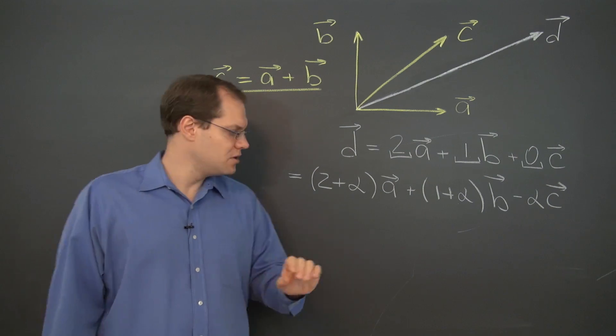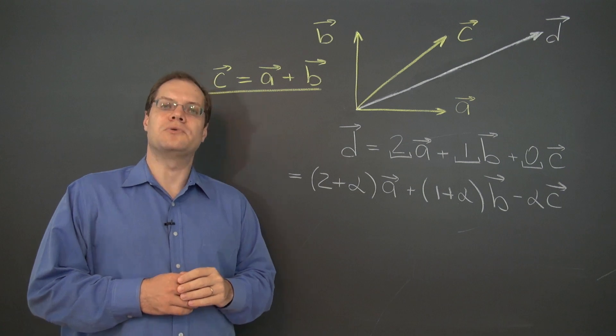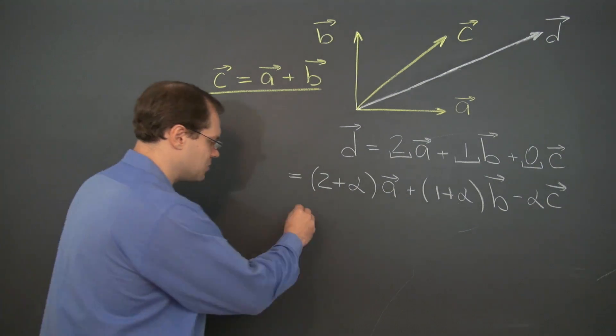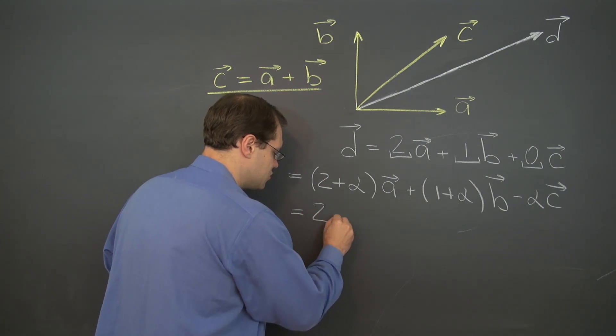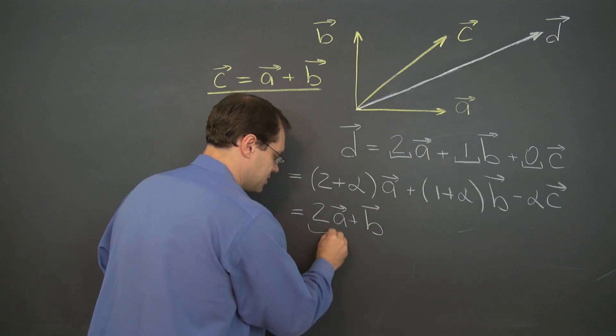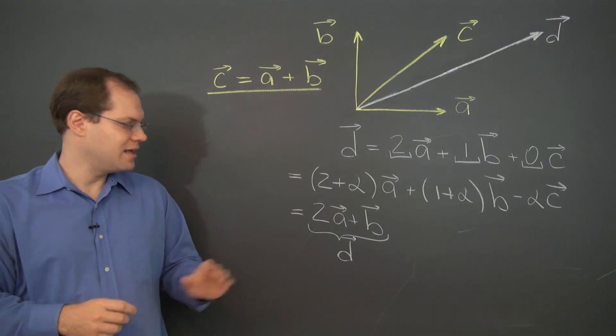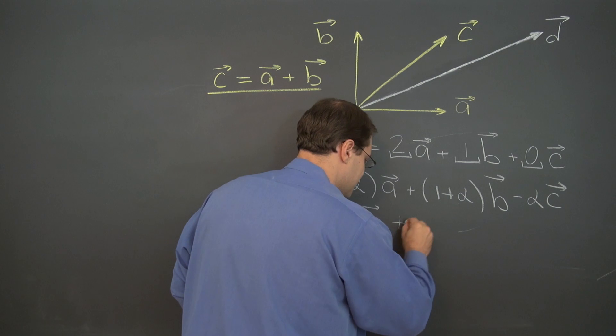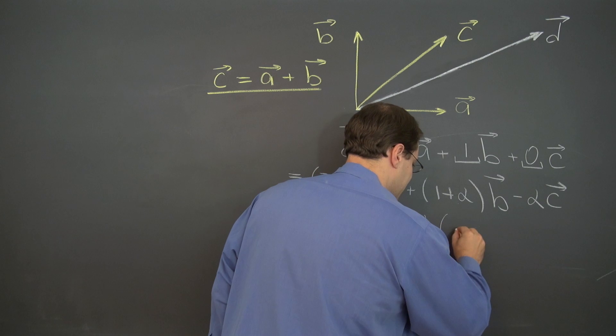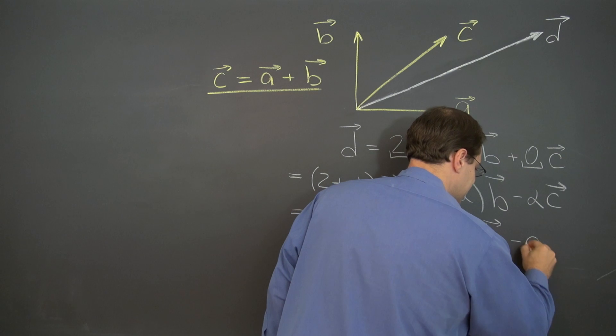Now what we're going to do is just rewrite this in a way that will prove to be a little bit more insightful. What we're going to do is combine all the terms that have alpha. And here's what we'll have. We'll have 2a plus b, which of course equals d. All right. And now all the terms that have alpha will allow us to factor out alpha.